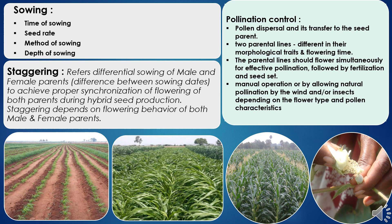Pollination is also critical, as pollen dispersal and its transfer to the seed parents plays a great role in seed yield. There should be effective pollination. There are two parental lines in hybrid seed production which differ in their morphological traits, flowering behavior, and flowering time.